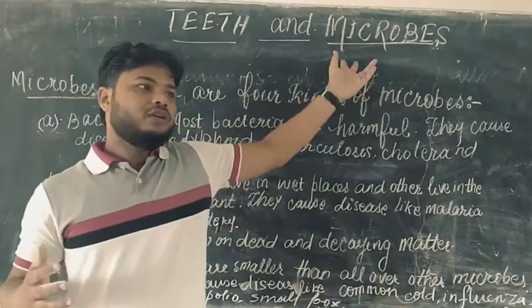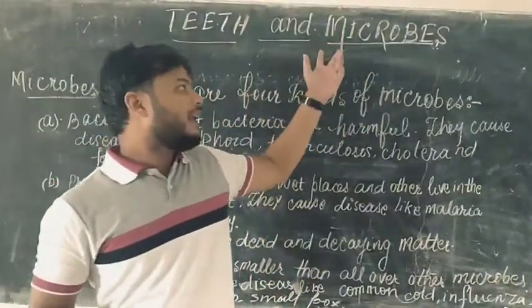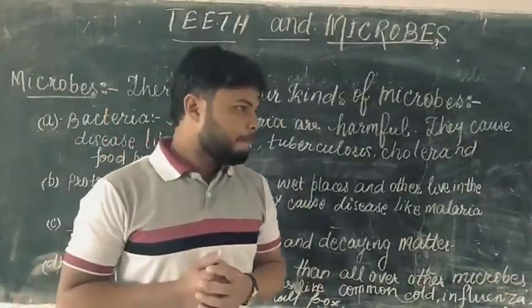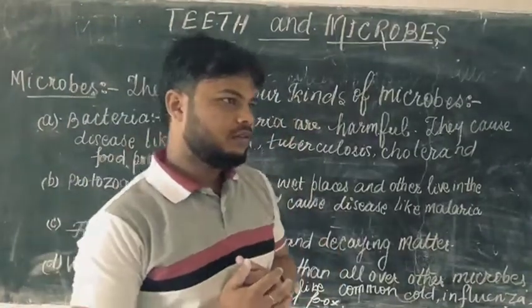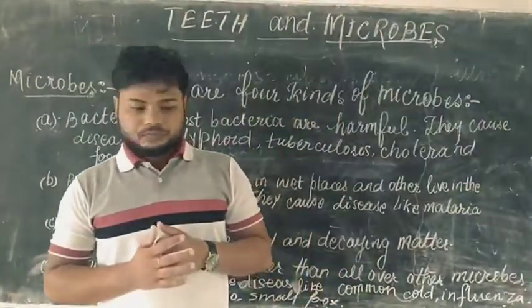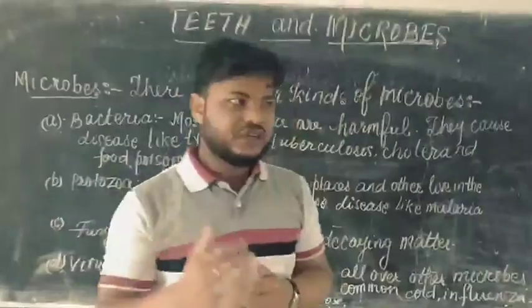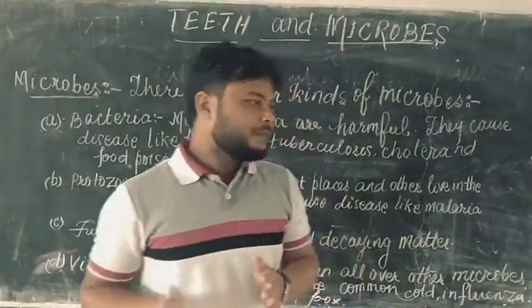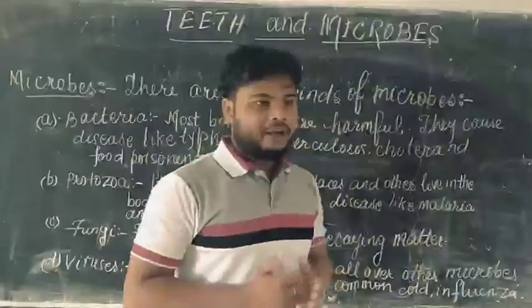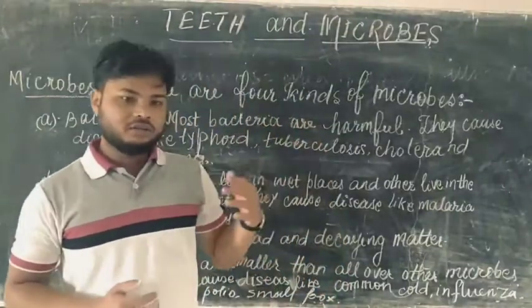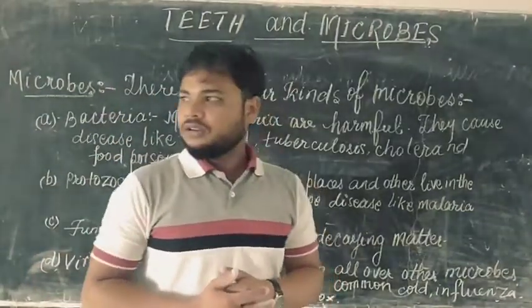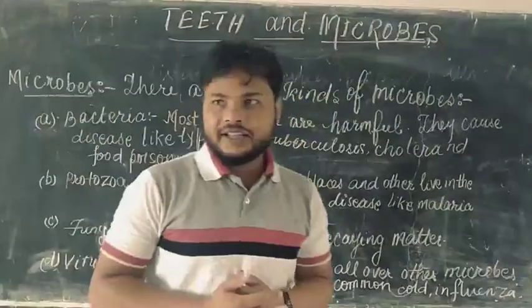Microbes fulfill all the criteria of living organisms: they are born, they grow, they carry out excretion, reproduction, and respiration — all the characteristics that belong to a living organism. Microbes also have a life span.